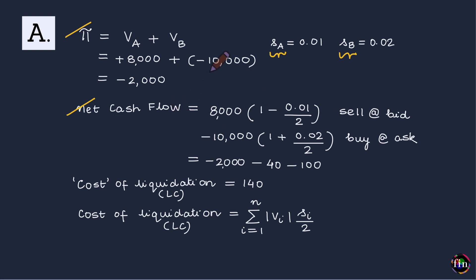Similarly, to close out the short position in stock B, the investor must buy back stock B to return it to the counterparty from whom it was borrowed. When buying back stock B, the investor hits the ask price. Therefore, if $10,000 was captured at the mid price, it must be adjusted upwards by half the spread. To buy back stock B, the investor pays 10,000 × (1 + 0.02/2).